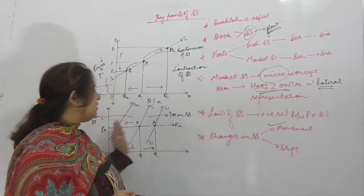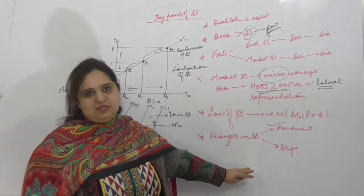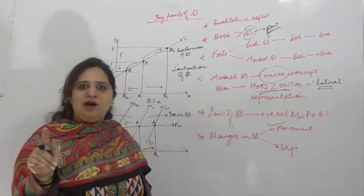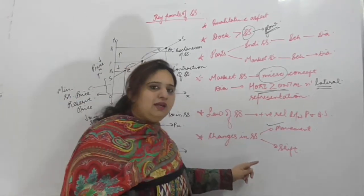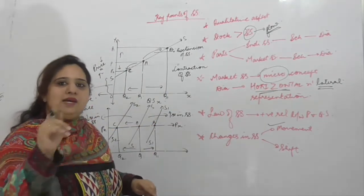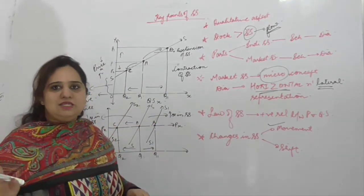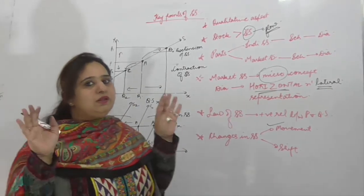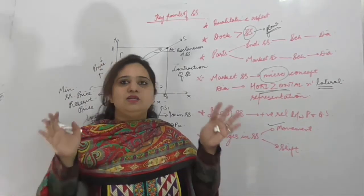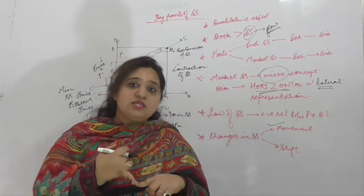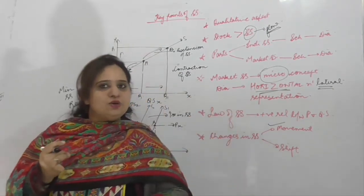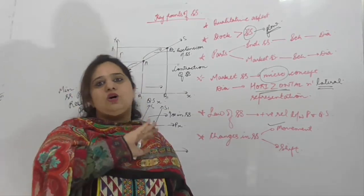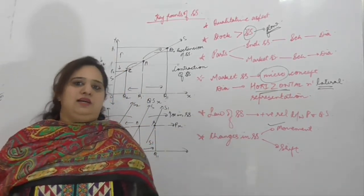Movement and shifting clear हो गया। Movement only due to own price — other factors constant। Shifting में own price constant और बाकी सारे factors बदल जाते हैं जिसके कारण supply curve अपनी original position change कर लेती है। Chapter का brief यही है — always remember: there is a positive relationship between price and quantity supplied, from the viewpoint of a producer, and the producer always wants profit. Thank you।